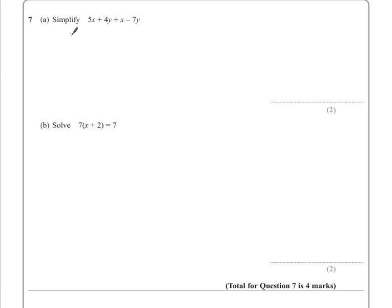Question 7, Part A. Simplify 5x plus 4y plus x subtract 7y. To do this I would gather families that are the same together.